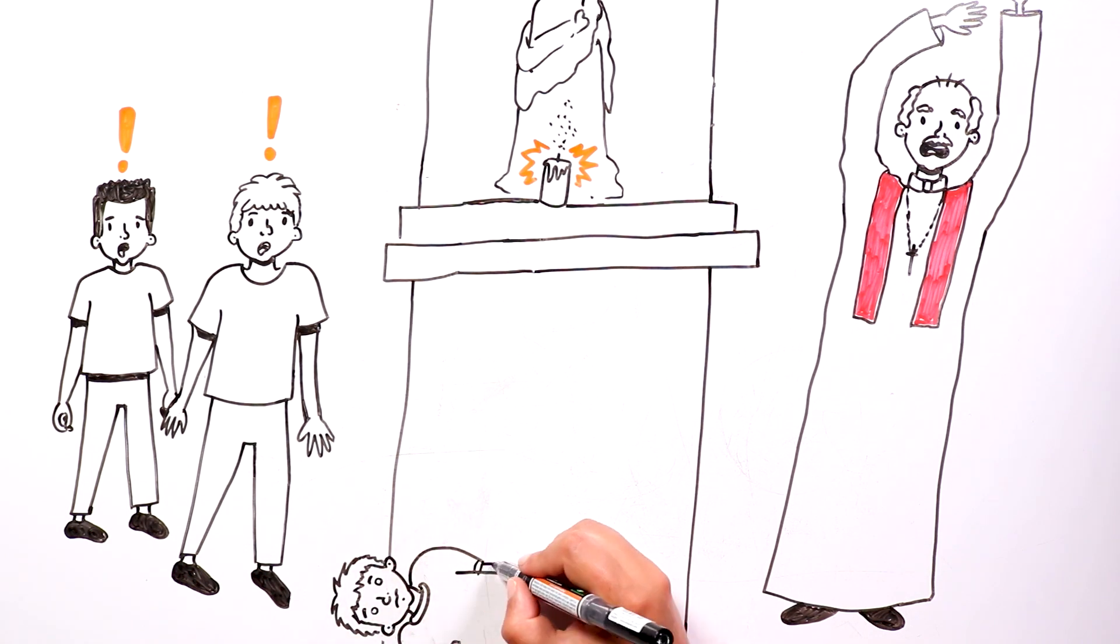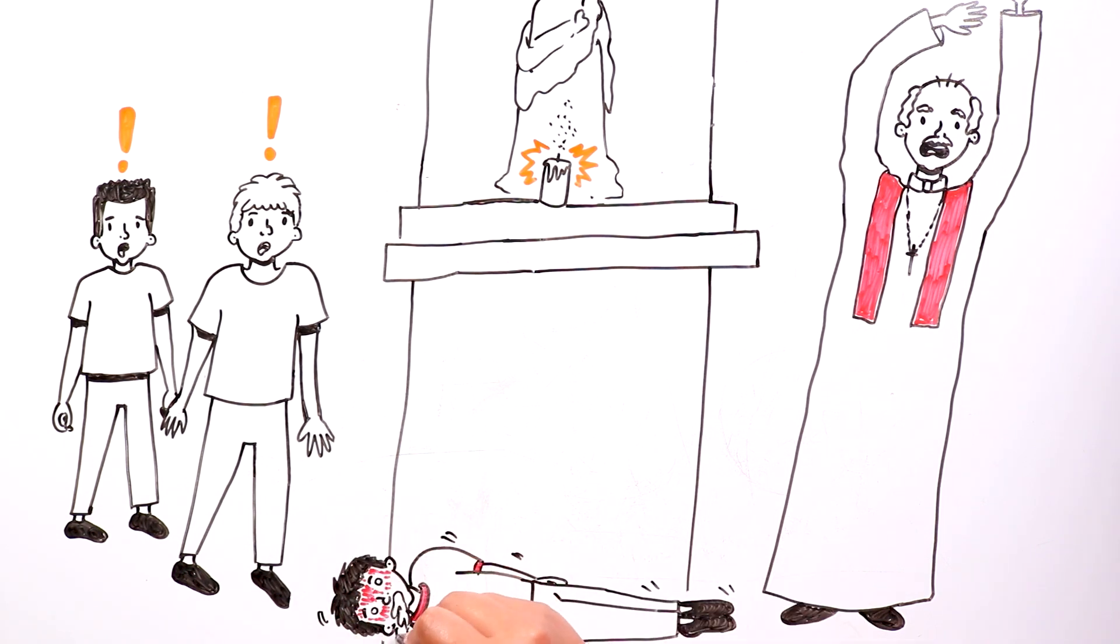He started to have seizures and foam at the mouth, and a few moments later, his lips got so separated that it seemed as if his jaw was about to dislocate and fall out.